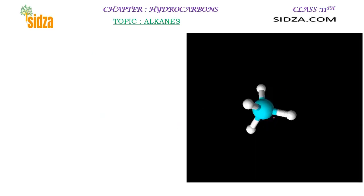You can see this — this is methane, with the carbon in the center and four hydrogen atoms around it. This is the simplest molecule, methane, with sp3 hybridization. This particular carbon has sp3 hybridization, around it there are four hydrogen atoms, and the shape will be tetrahedral.